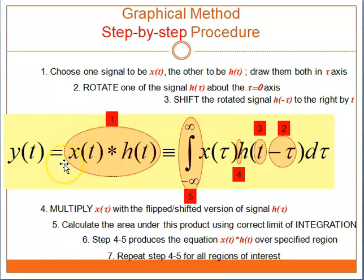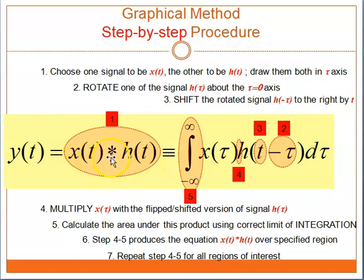So you will have Yt — this is given to you — Yt is equal to Xt convoluted with Ht. So this would be Xt convoluted with Ht.